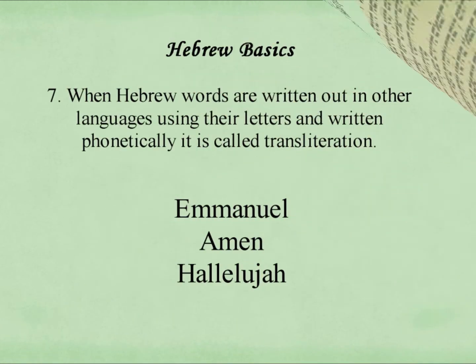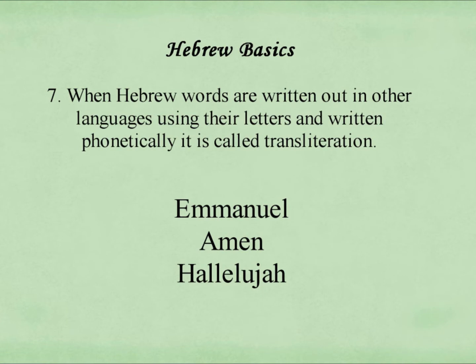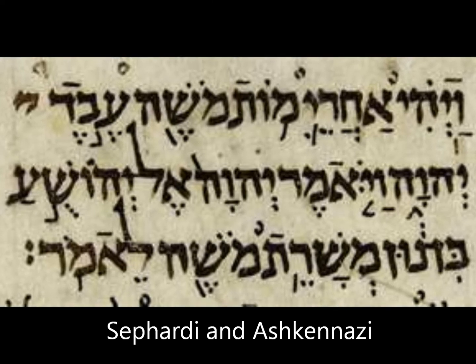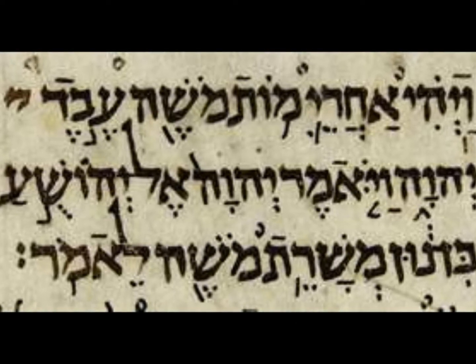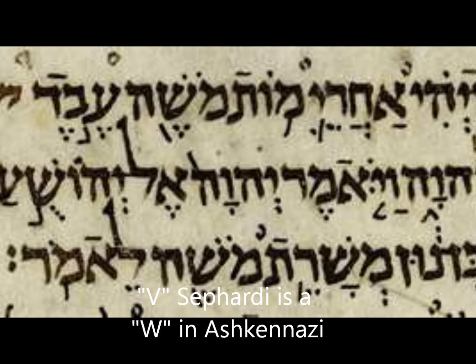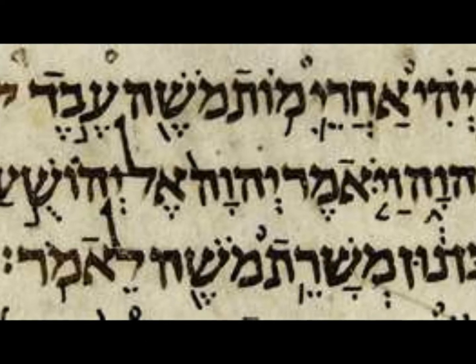Number seven: when Hebrew words are written out in other languages using their letters and written phonetically, it is called transliteration. Since there are numerous letter combinations used to translate a word, you will see variations in English transliteration of Hebrew words. For example, you will see 'Immanuel' with an I versus 'Emmanuel' with an E. There are two pronunciations of the Hebrew language, Sephardi and Ashkenazi, and this also influences how Hebrew words are transliterated into English. For example, a V sound may be a W sound in Ashkenazi.